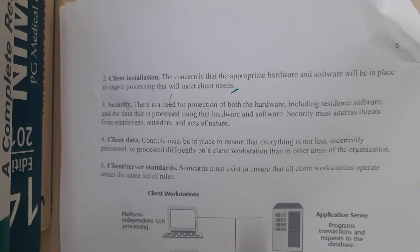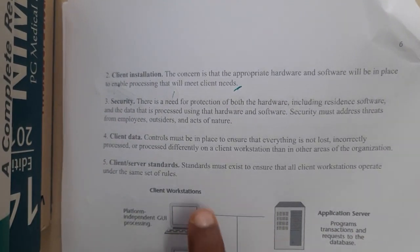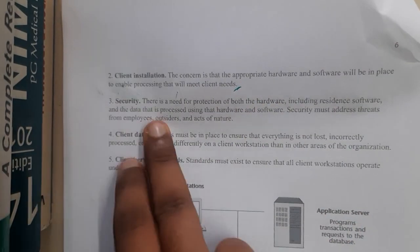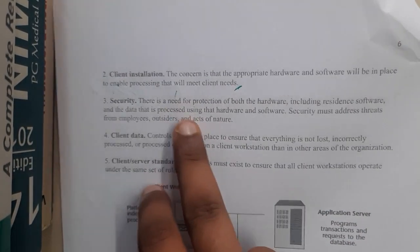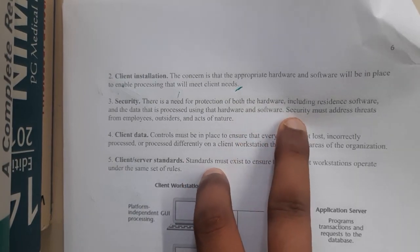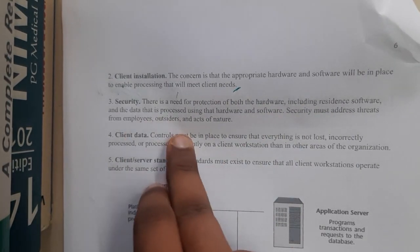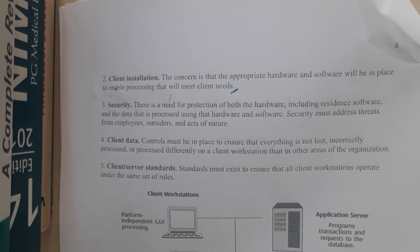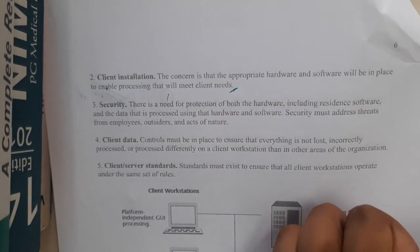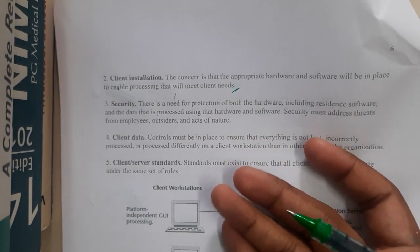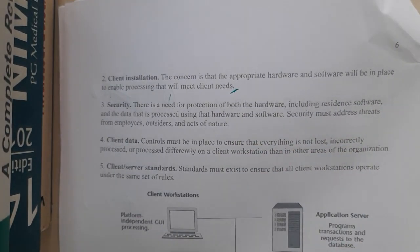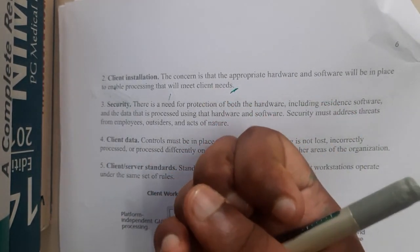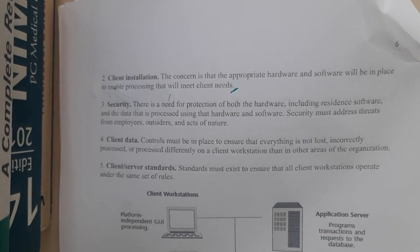The third concern is security. There is a need for protection of both hardware, including the resident software, and data. Security must address threats from employees, outsiders, and acts of nature. Whenever you take input from a user — such as an Aadhaar number, PAN number, or social security number — you should always store it in a secured way, and it is always better to encrypt it.